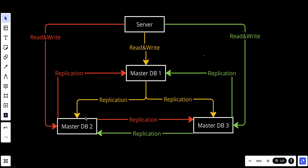So let's talk about what a multi-master database is and how we can solve conflicts. A multi-master database is a configuration in database replication where there are multiple database servers, each of which can act as both a master and a slave. In this setup, any of the database servers can accept both read and write operations.